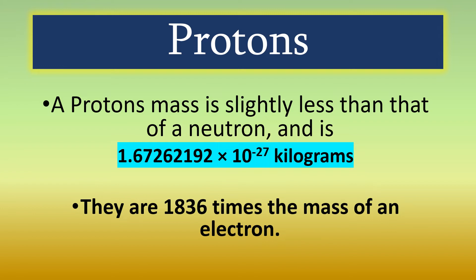Now, a proton's mass is slightly less than that of a neutron and is approximately 1.6726 × 10^-27 kilograms. Protons are 1836 times the mass of an electron.